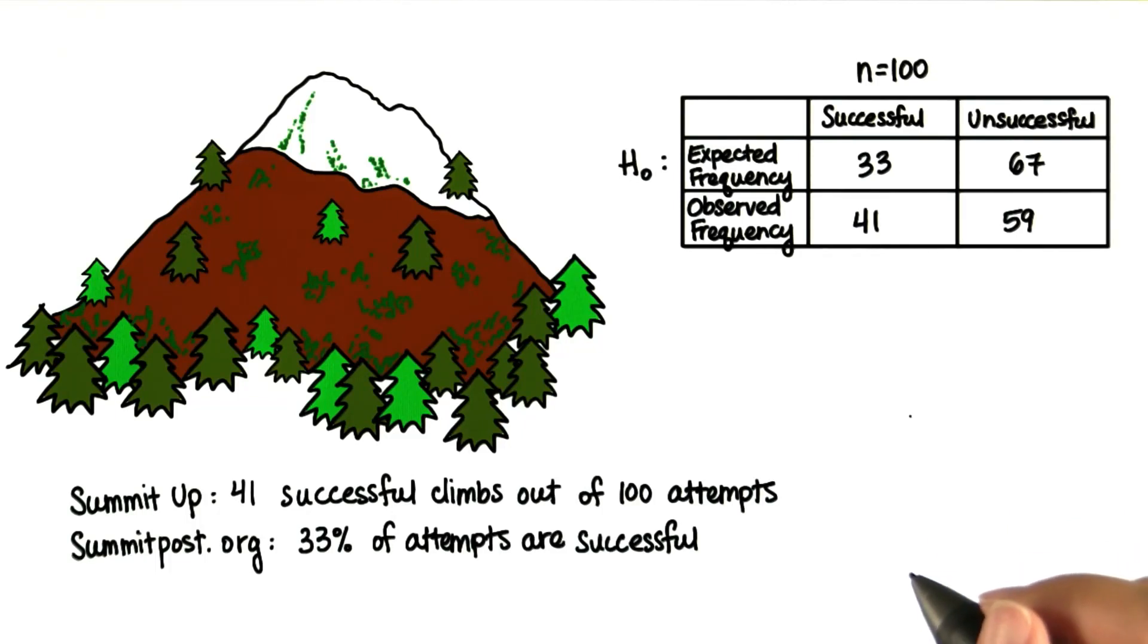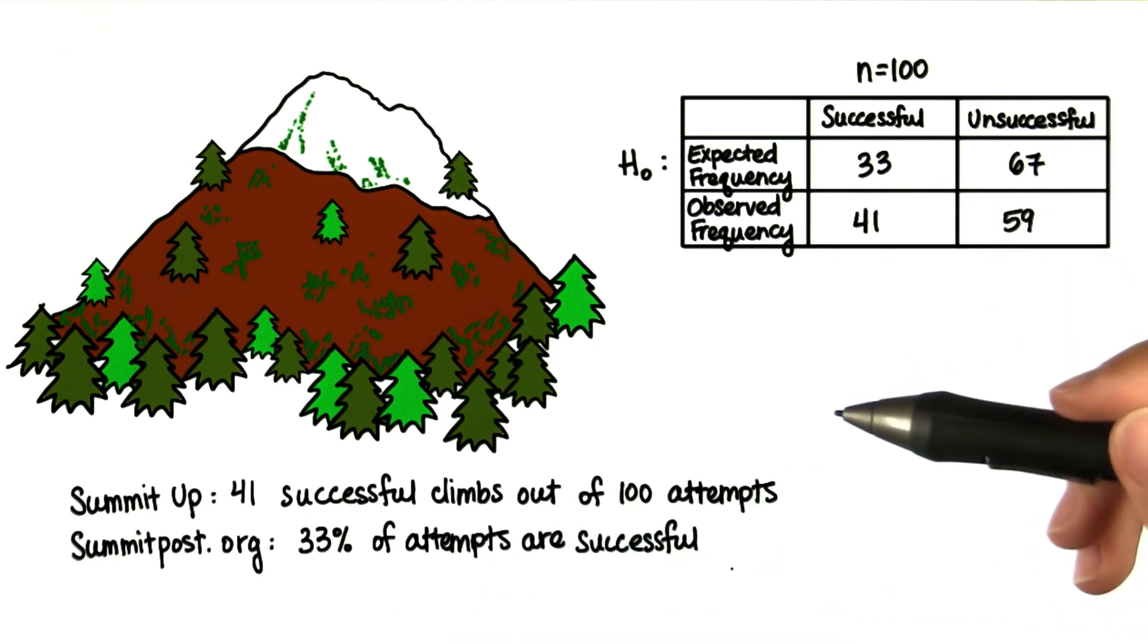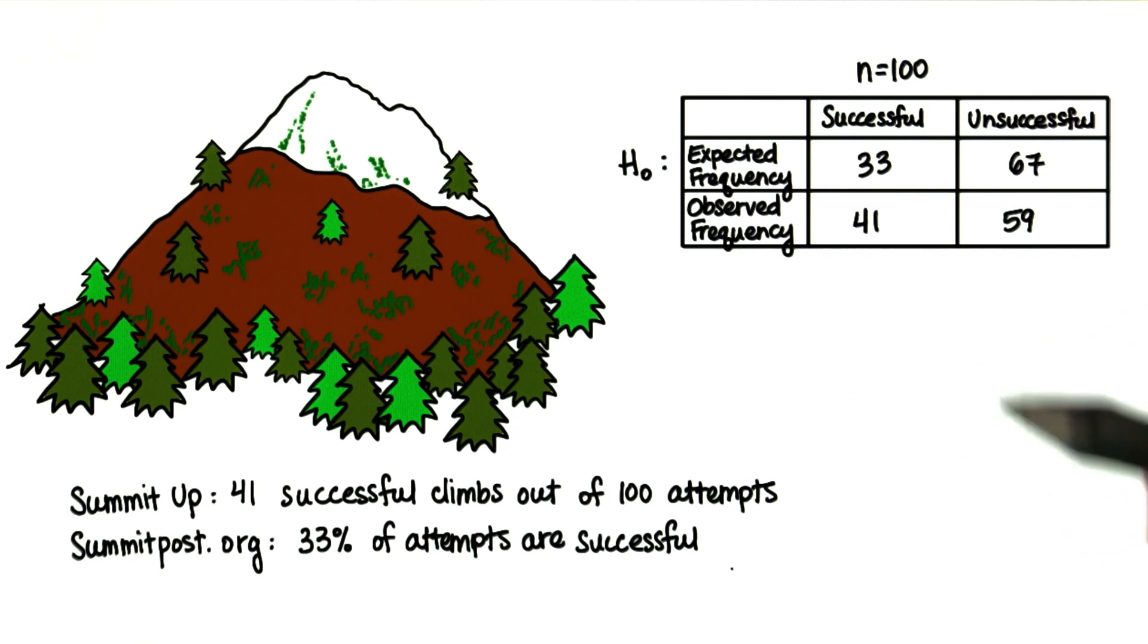Let's get back to our Mount Shasta example. In this case, remember, our null hypothesis would be based on the population. So knowing which null hypothesis to use, it can be tricky.